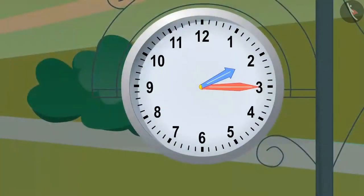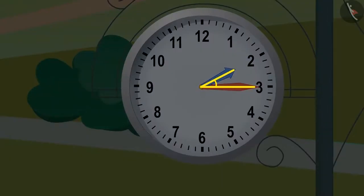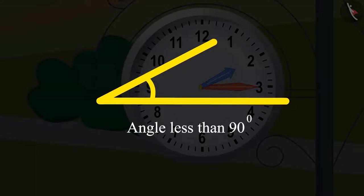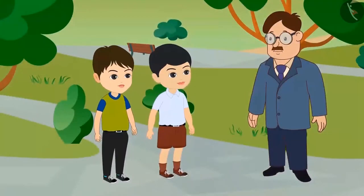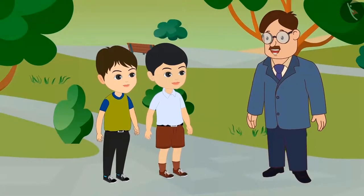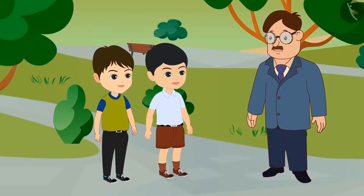Do you remember what we have learned about the angles formed in the clock? Yes, now the time is quarter past two. And if we look at the hands of the clock, we can see that they are making an angle less than 90 degrees. Is that correct, uncle? Yes, you are absolutely correct, Golu.